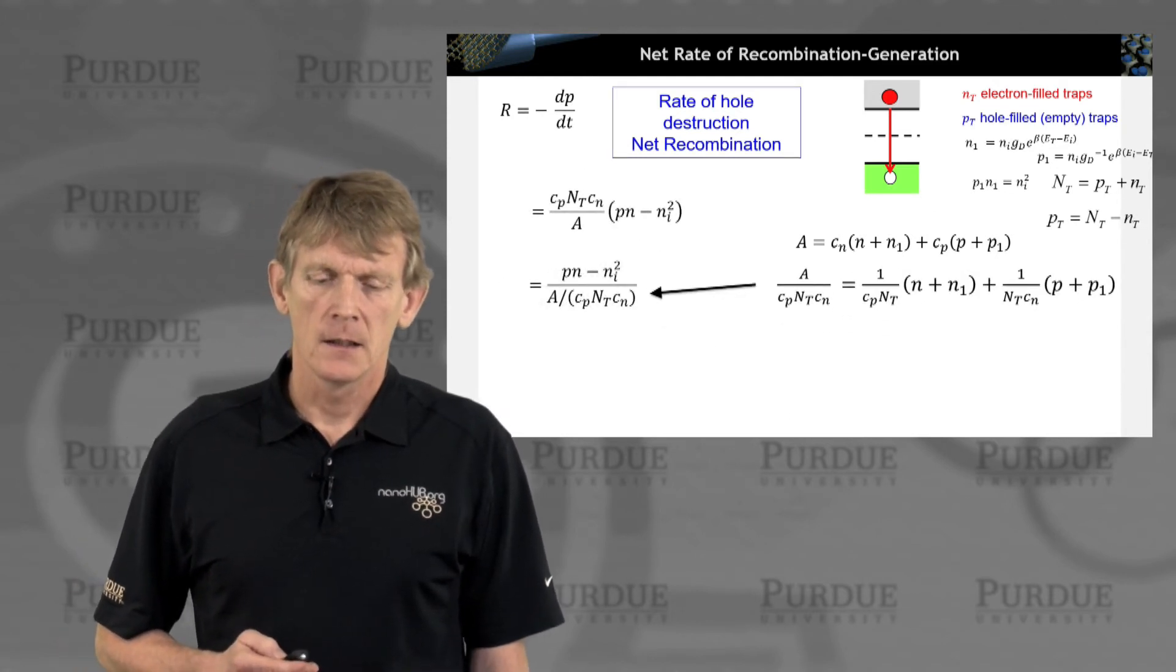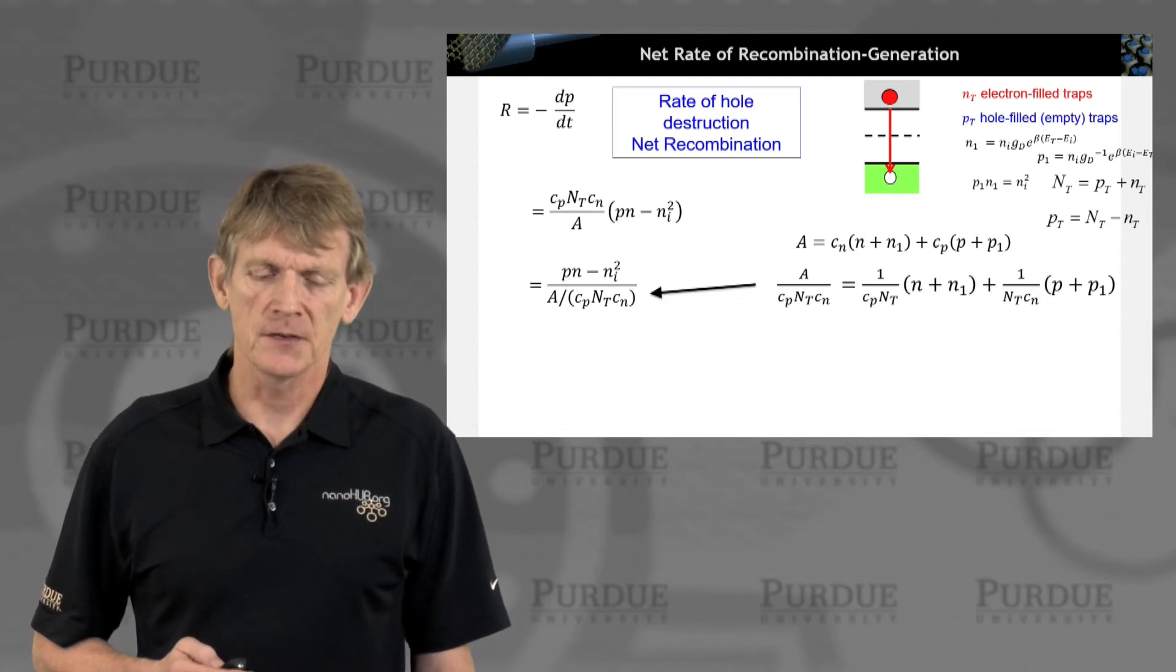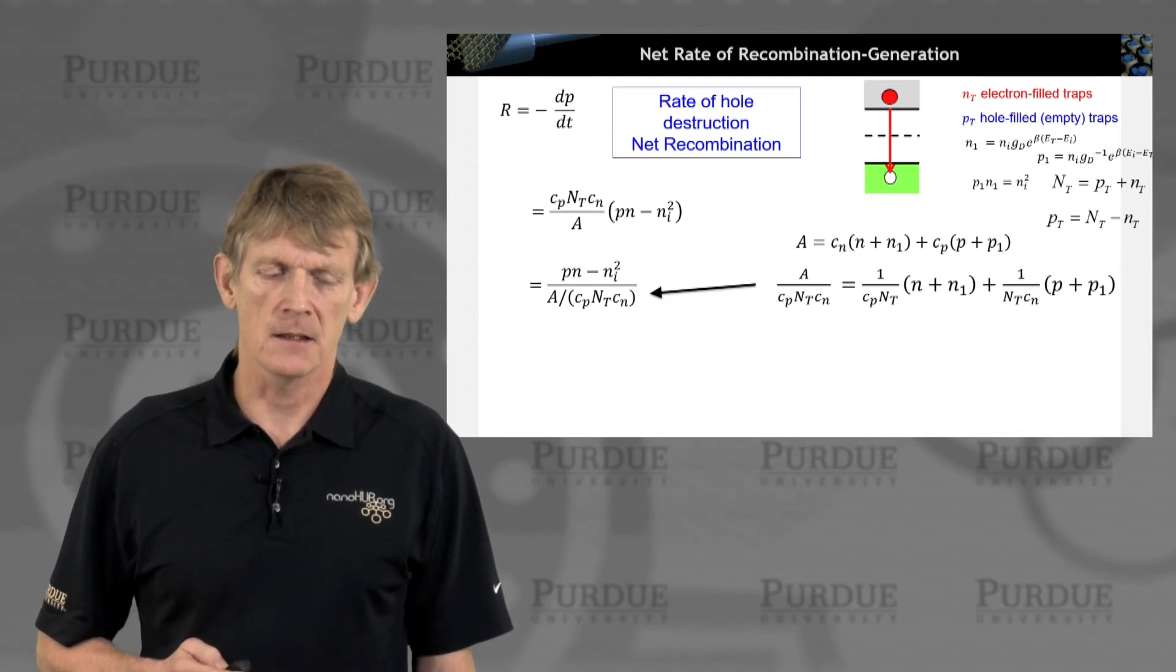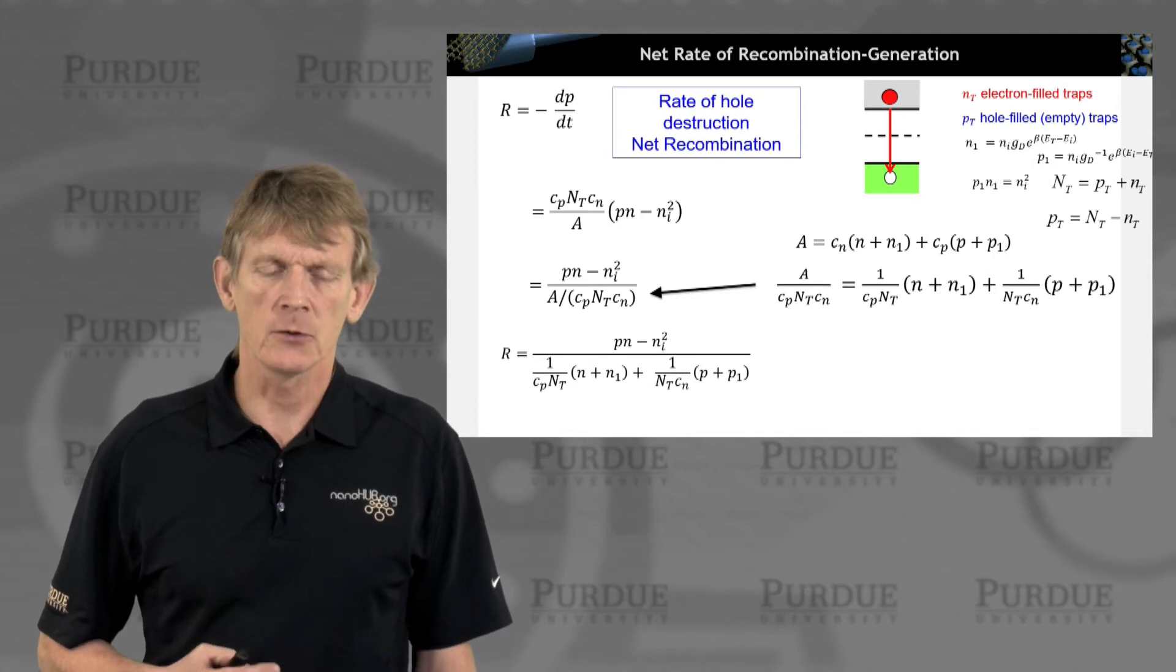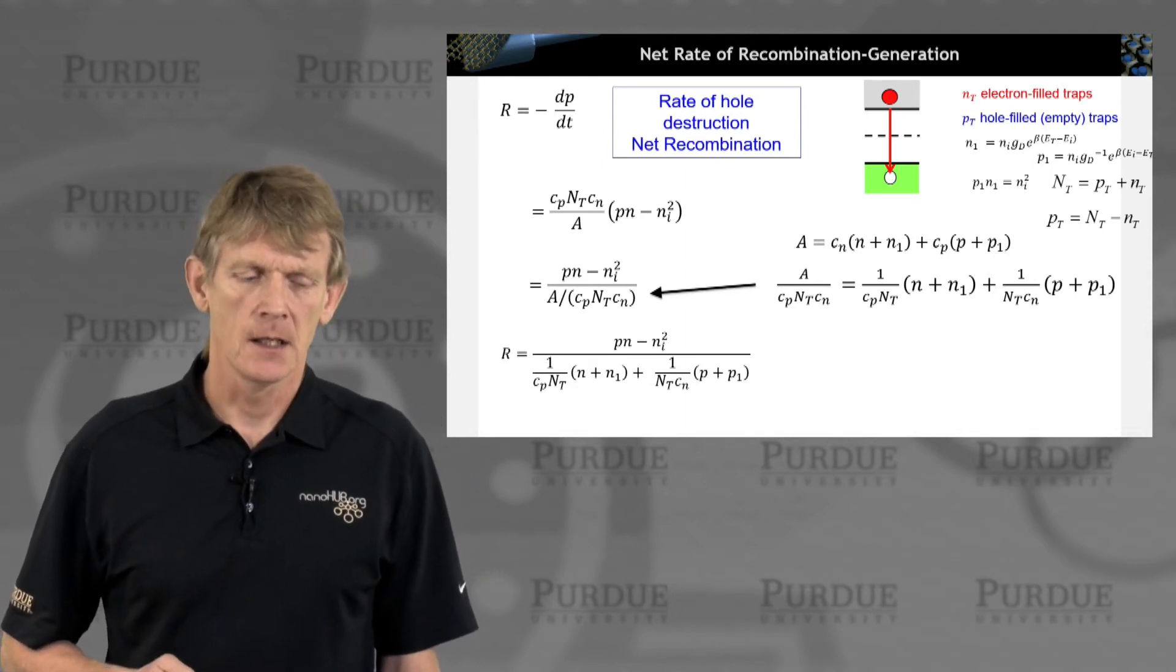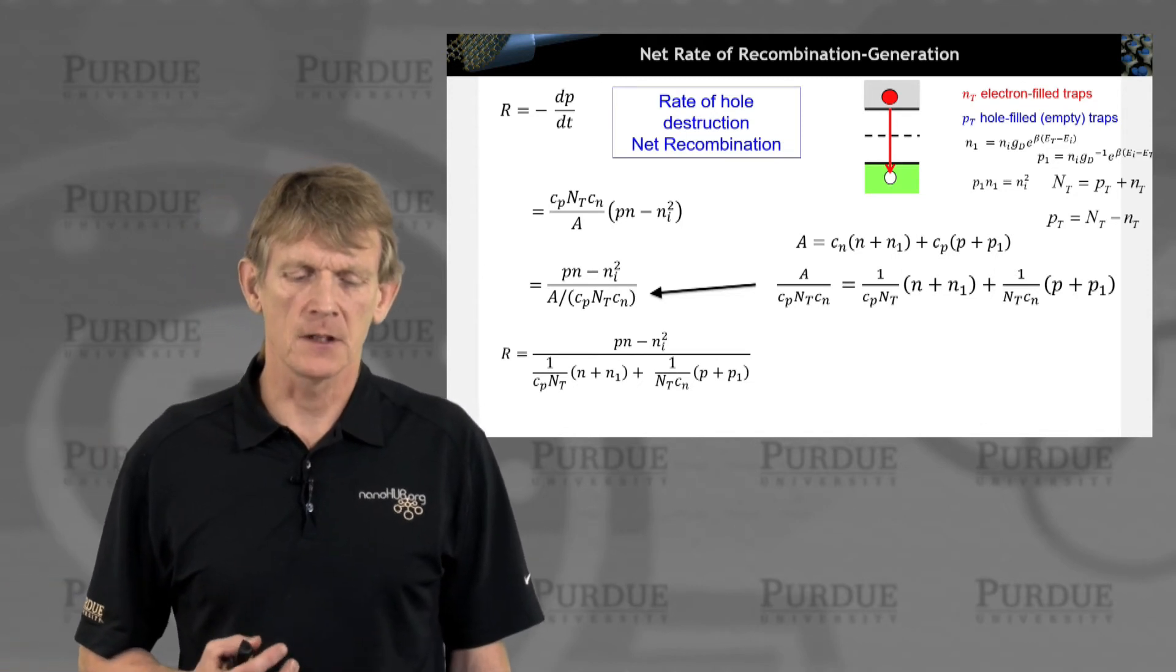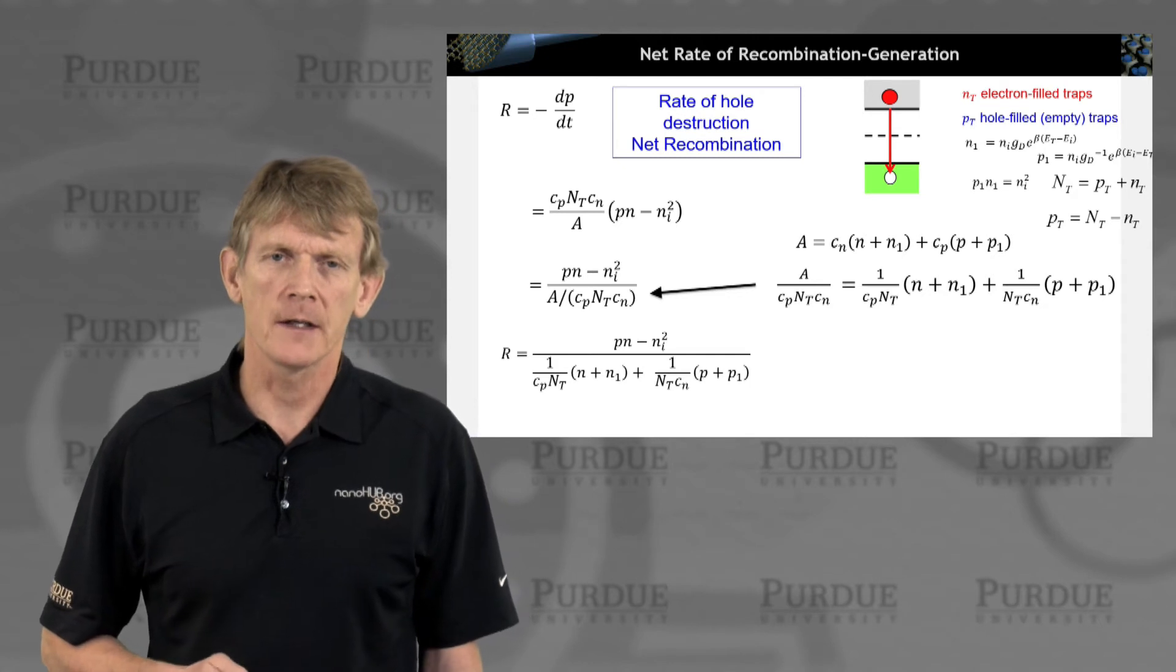Alright. So we're going to split the sum into two quotients, and we're going to identify them now as 1 over Cp Nt and 1 over Cn Nt. And those coefficients actually have a physical meaning. But for now, we're just going to take this ratio of A over Cp, Cn, and Nt, and plug it into the expression here. And we have an expression for the Shockley-Reed-Hall recombination that we could walk away from. This is something that you can deal with.